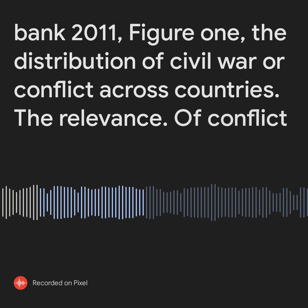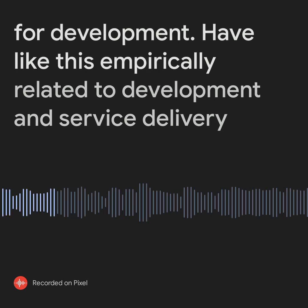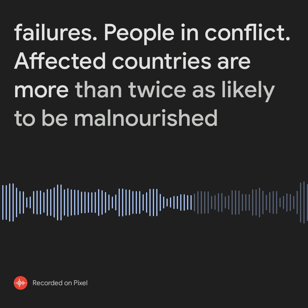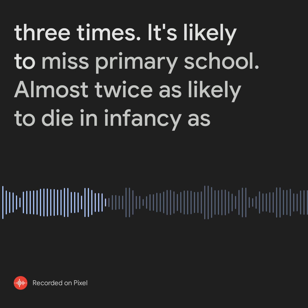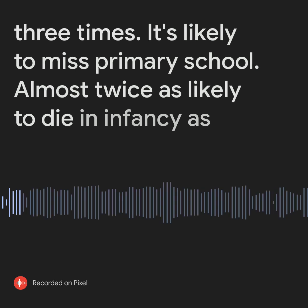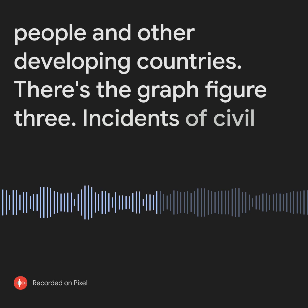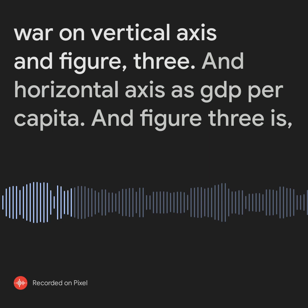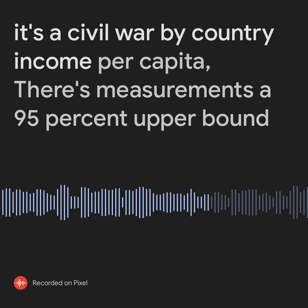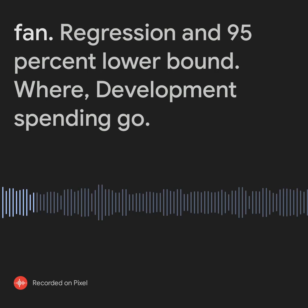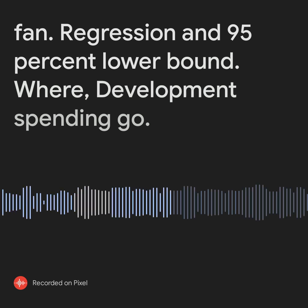The relevance of conflict for development: conflict is empirically related to development and service delivery failures. People in conflict-affected countries are more than twice as likely to be malnourished, three times as likely to miss primary school, and almost twice as likely to die in infancy compared to people in other developing countries. Figure 3 plots incidence of civil war on the vertical axis against GDP per capita on the horizontal axis, with a 95% upper and lower bound fan regression. Where does development spending go?